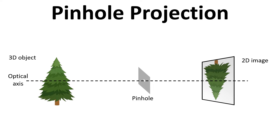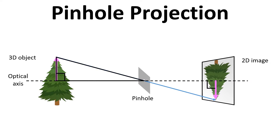We're going to draw some extra arrows in. The first arrow will be from the optical axis to the top of the object, and then we'll trace a ray of light from the top of that arrow to the 2D image. We'll place another arrow from the optical axis to the top of the image, but because it's inverted it points down. These two arrows and the light ray form two triangles, with right angles between the arrows and the optical axis, giving us right-angle triangles on both the object side and the image side.